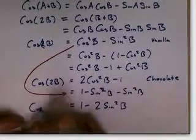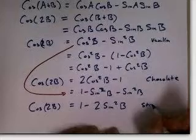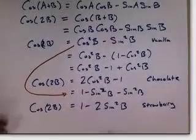So the cosine of 2B could also be written as 1 minus 2 sine squared B. And this is what I call the strawberry flavor of the double angle formula for cosine.